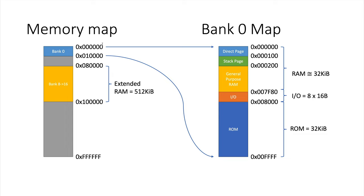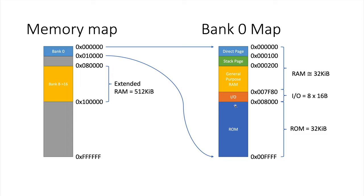In the picture you can see the total addressable memory of the CPU. The extended RAM starts at bank 8. In bank zero we have RAM from page zero almost to the end of page 128, with a small region carved out for 8×16 bytes of I/O addresses. The direct page is at page zero, the stack page at page one, general purpose RAM starts at page two, and starting at page 128 we have 32K of ROM until the end of the bank.